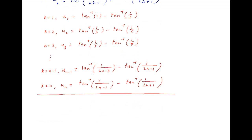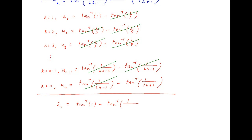Now we add up all of these equations. On the left-hand side we have the sum of the n terms of the series — let's denote it by Sn. On the right-hand side, tan inverse 1 upon 3 in the first row cancels with tan inverse 1 upon 3 in the second row, and so on and so forth, till we are left with only two terms on the right-hand side. Therefore, the value of Sn is equal to tan inverse 1 minus tan inverse 1 upon 2n plus 1, which is equal to pi upon 4 minus tan inverse 1 upon 2n plus 1. This is the required answer.